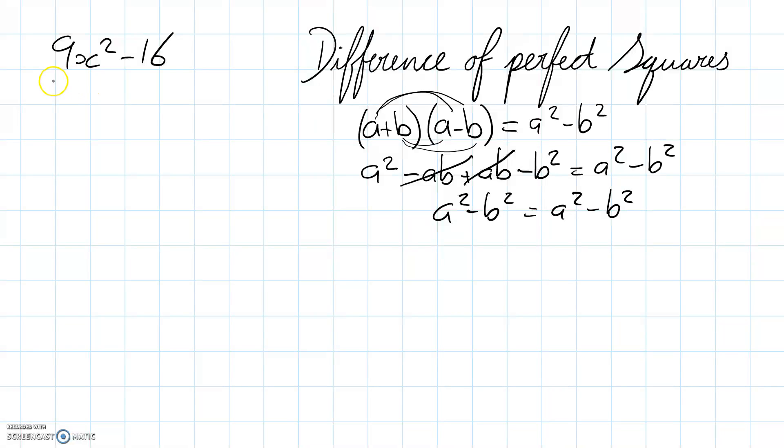Now it might not seem like these are straight away, but we can rewrite them in a way that is, because we know that 9 is a square number, so we could write this as 3x².